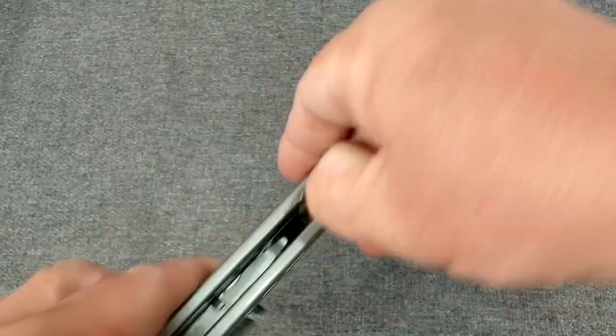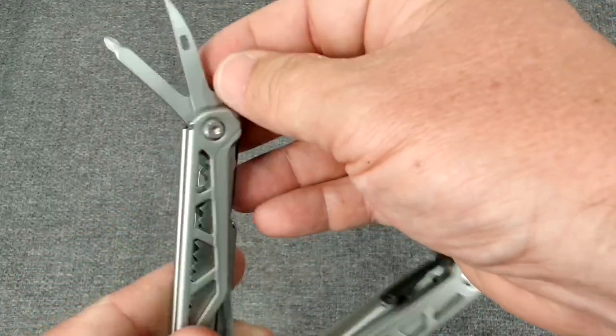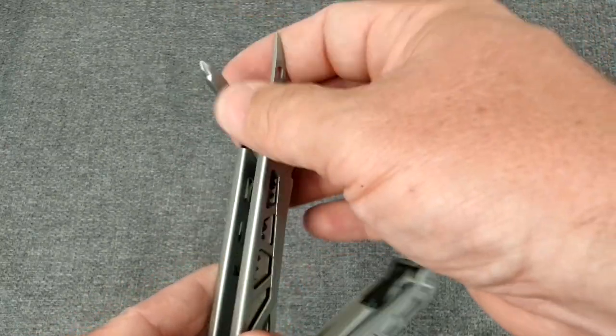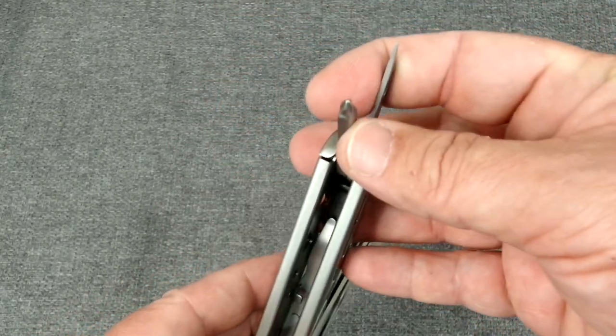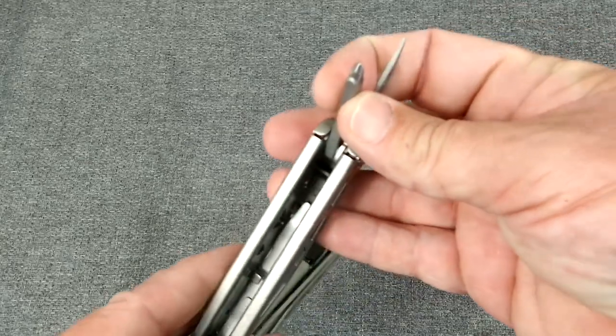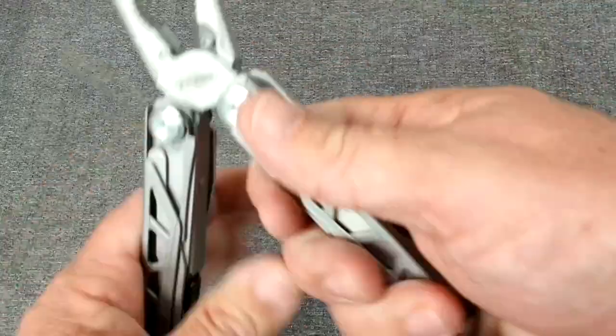And I'll show what's on this side as well. On this side, you have an awl and a relatively small Phillips screwdriver head. So that kind of rounds it out.